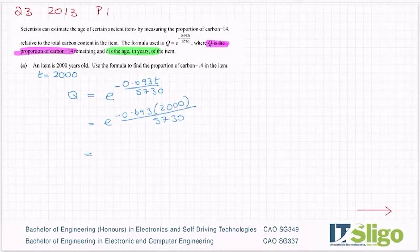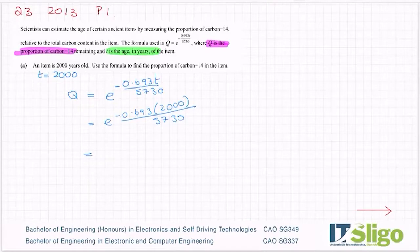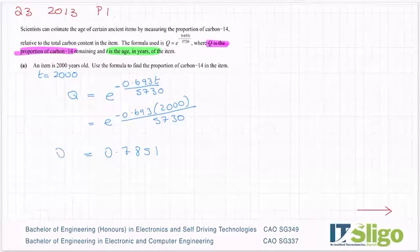Here's my calculator. Hit e to the power, it's sitting behind the LN button on the right. So shift LN, e to the power. I'm going to hit my fraction button straight away, put in the minus 0.693 bracket 2000 on the top and hit down and put in 5730. So I have got 0.7851. That is the amount of carbon-14 in the item.